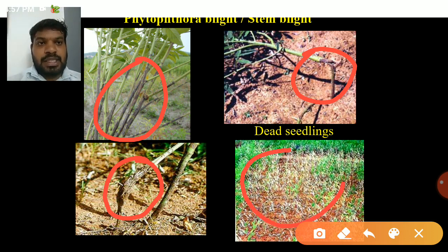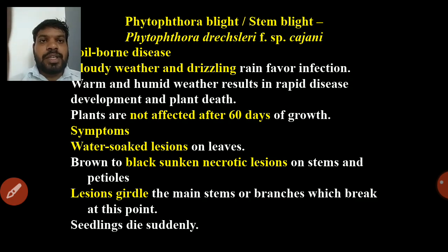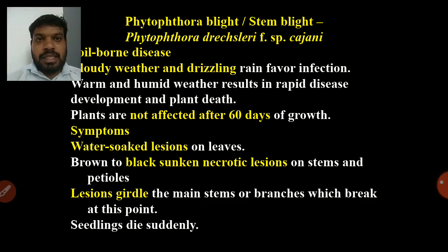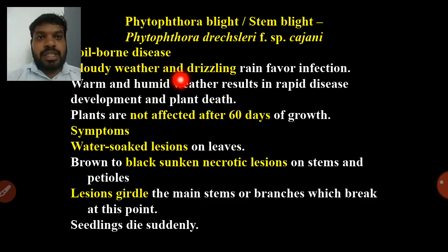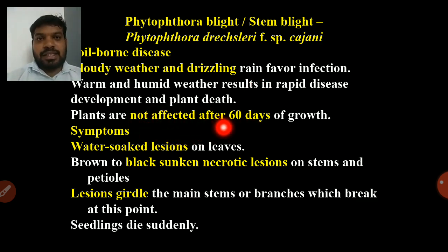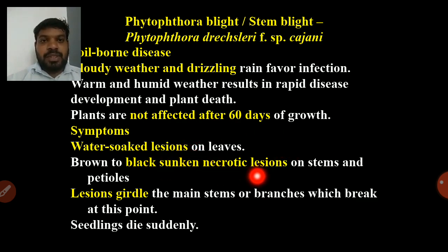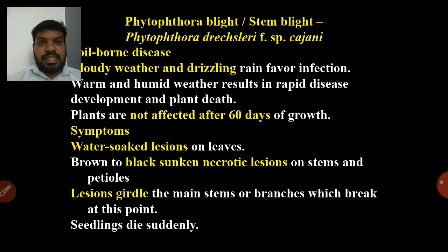Phytophthora blight or stem blight is caused by Phytophthora drechsleri. It is a soil-borne disease that occurs in cloudy and drizzling weather. Plants are not affected after 60 days. Symptoms include water-soaked lesions on leaves, black sunken necrotic lesions on the collar region, lesions that girdle the main stem, and sudden seedling death.